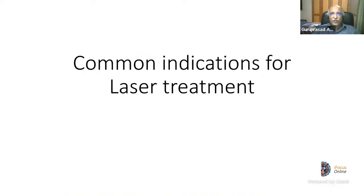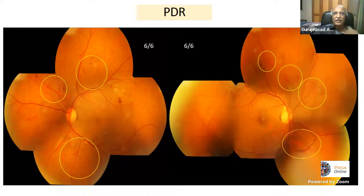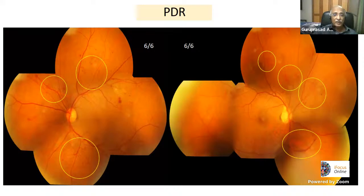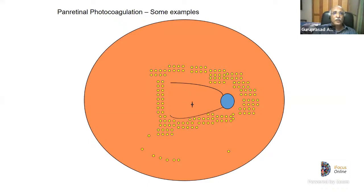A common indication for laser is high-risk PDR. This is a bilateral case with 6/6 vision in both eyes yet with neovascularization everywhere — disc neovascularization, neovascularization elsewhere, and a subhyaloid hemorrhage that could be mistaken for a blood vessel. As per DRS study guidelines, this patient urgently needs pan-retinal photocoagulation.